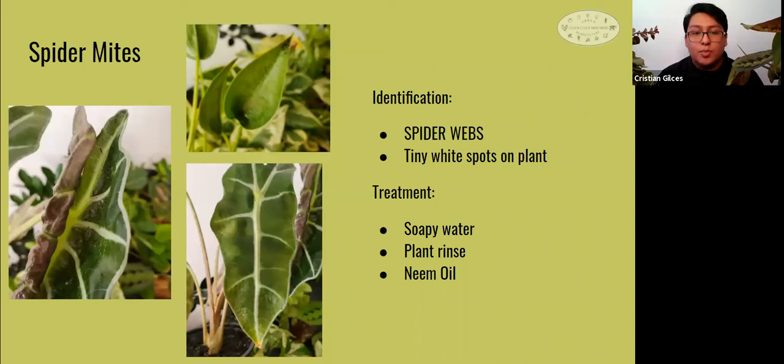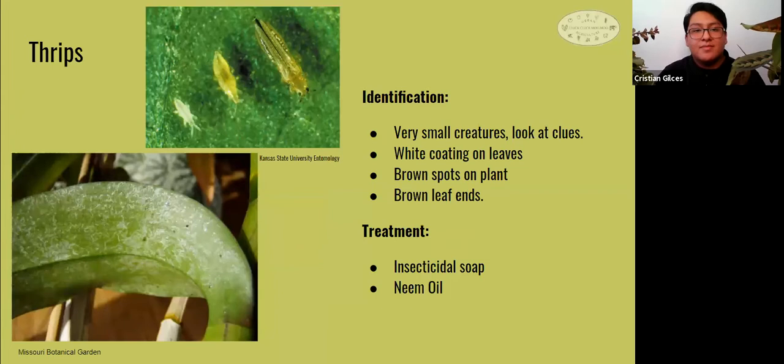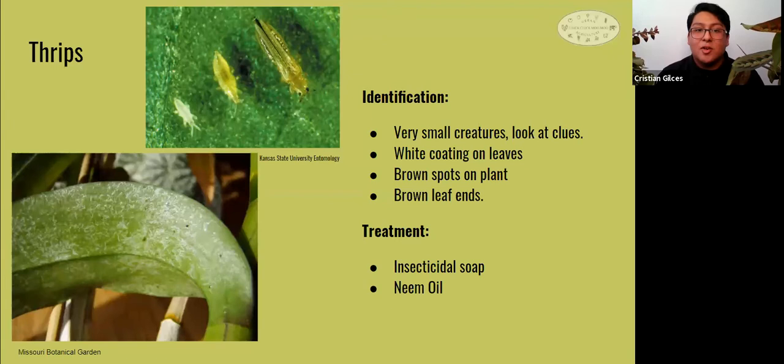The next pest is thrips. They are super small and have a long shape to their bodies to look out for. When I say thrips are small, I mean they are very small. The key to thrips is catching them in the first place, which can be really difficult because of how small they are. If you see a white dusty coating on your plant leaves, then you know you have thrips, as that is in most cases the most prominent clue.